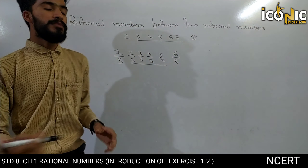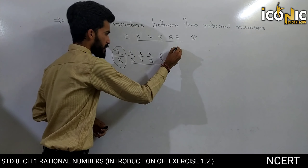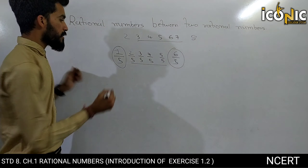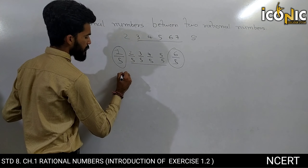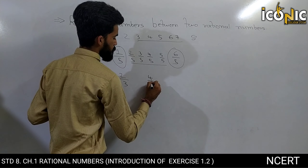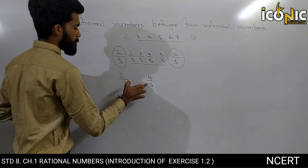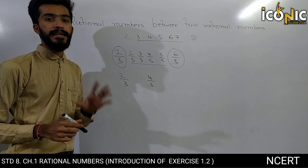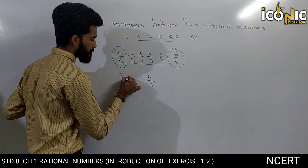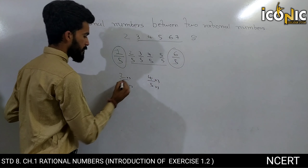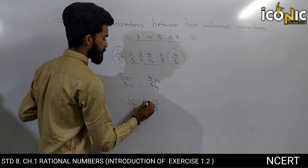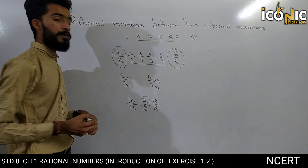Per agar main aisa bolun ki there are infinite rational numbers between any two rational numbers - yaani ki kisi bhi do rational numbers ke beech mein infinite rational numbers ho sakte hain - toh woh kaise hoga? Suppose yahan par hamare paas 2 upon 3 and 4 upon 5. Toh sabse pehle mujhe iske beech ke rational numbers find karne hain, toh pehle mujhe dono ka denominator same chahiye. Dono ka LCM hota hai 15. Toh yahan par ise 5 se multiply karna padega, ise 3 se multiply karna padega. Toh 2 × 5 = 10 by 15, aur 4 × 3 = 12 by 15. Toh iske beech mein sirf ek number reh raha hai: 11 by 15.